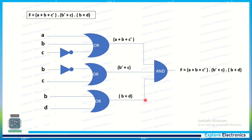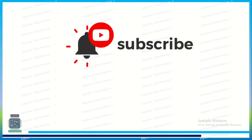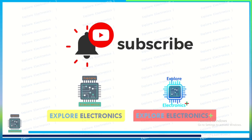This is how we simplify a given max term function using K-map, obtain the final POS expression, and implement it using basic gates. If the question asks to implement using NAND gates, we can replace AND, OR, and NOT gates with NAND gates and verify the functionality. This is how we solve these kinds of questions when a function is given and asked to implement using gates. Thank you.